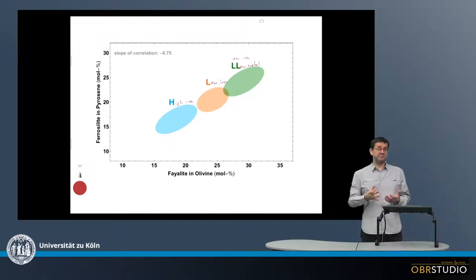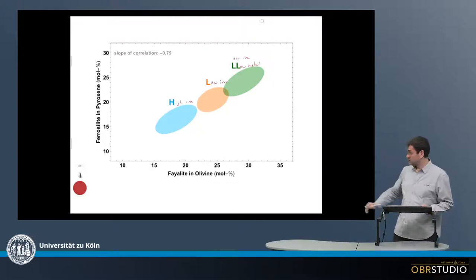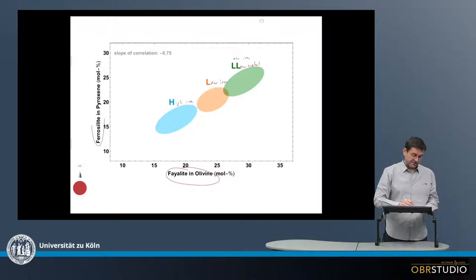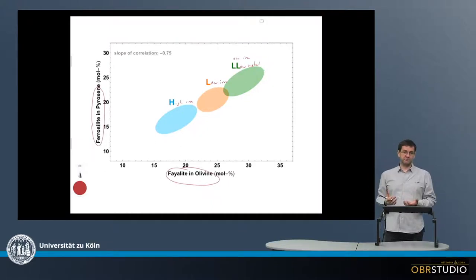The classification is based on the iron content in olivine and pyroxene. On the x-axis here, there's the fayalite content in olivine in mole percent, and on the y-axis there's the ferrosilite content in mole percent in pyroxene.